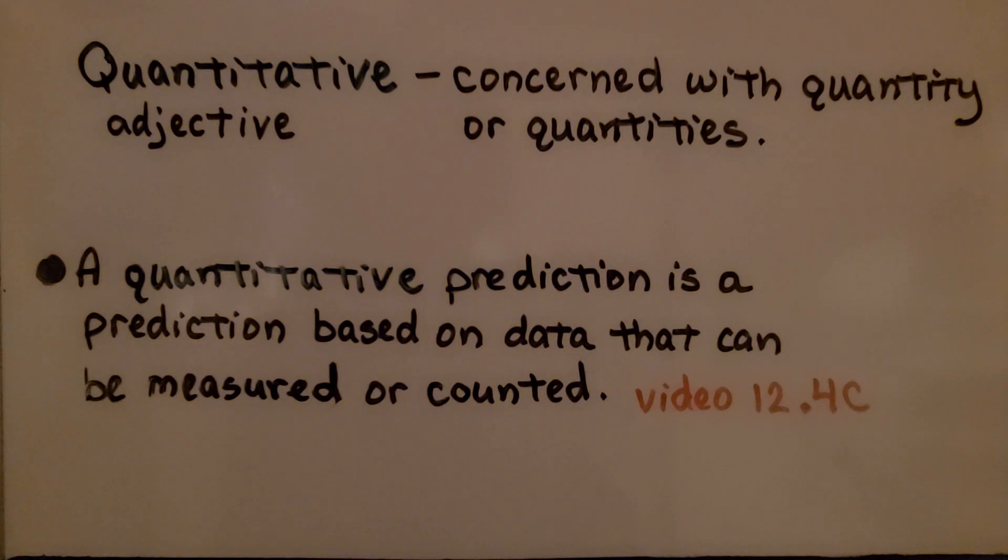Back in Module 12, we discussed quantitative data and predictions. Quantitative is an adjective meaning concerned with quantity or quantities. A quantitative prediction is a prediction based on data that can be measured or counted. I'm going to have a link to 12.4c if you missed it or if you need to remember.